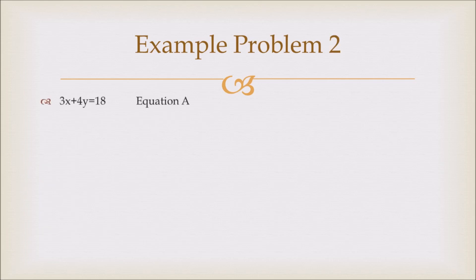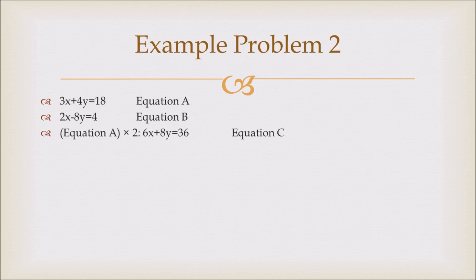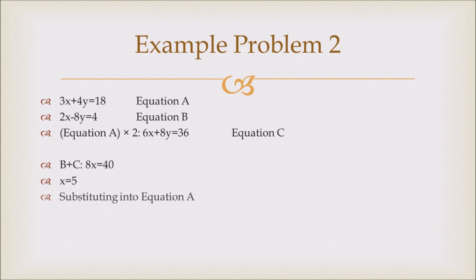Now here's a harder example. The two equations are 3x + 4y = 18, and 2x - 8y = 4. Right off the bat, we notice that none of the coefficients on any of the variables are the same, so we'll have to multiply one of them by a constant. Since 4 × 2 = 8, if we multiply equation A by 2, we get 6x + 8y = 36 — we'll call this equation C. Now equation B and equation C have the same coefficients on y, so we can add the two to get 8x = 40, and therefore x = 5. We can substitute this back into equation A: 3(5) + 4y = 18.